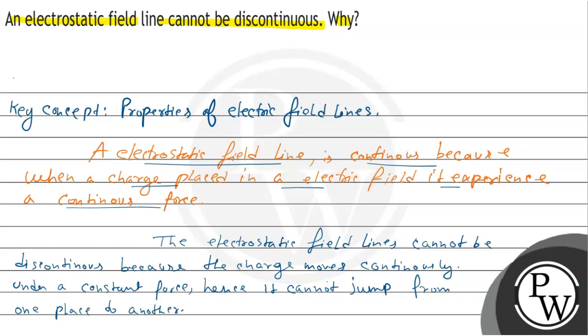Electric field lines cannot be discontinuous because the charge moves continuously under a constant force, meaning it cannot jump from one place to another. That's why an electric field line cannot be discontinuous. Hope you understand the question. Best of luck.